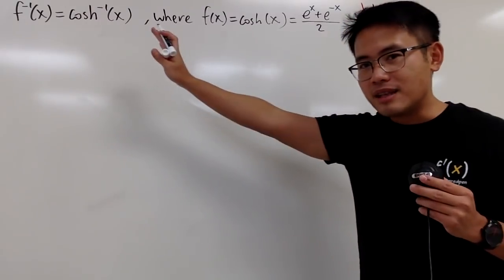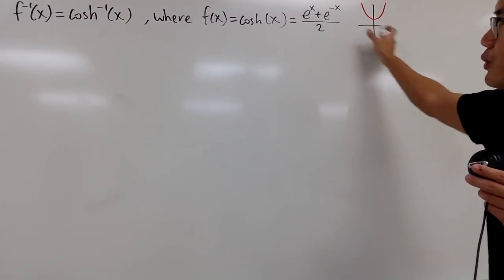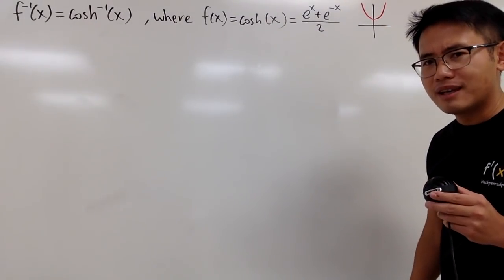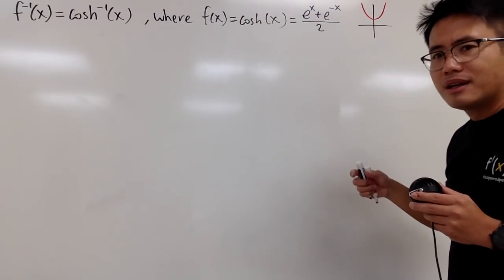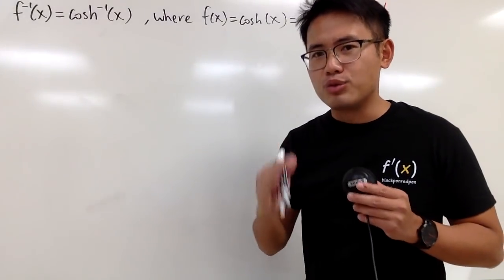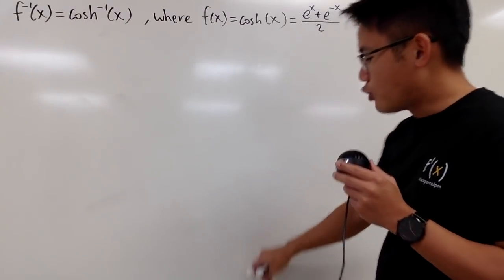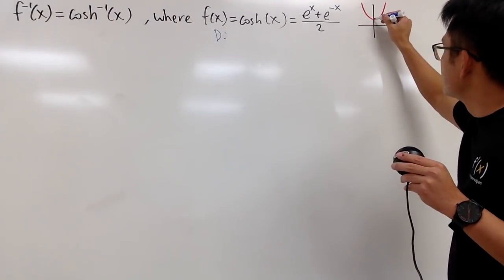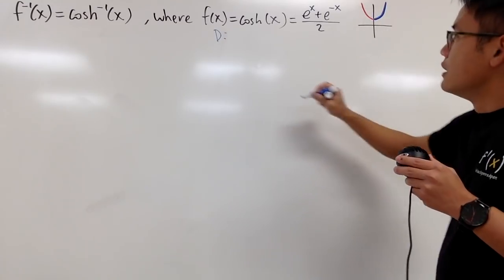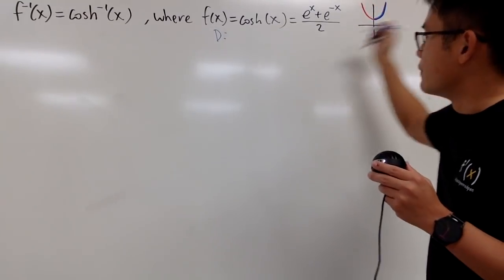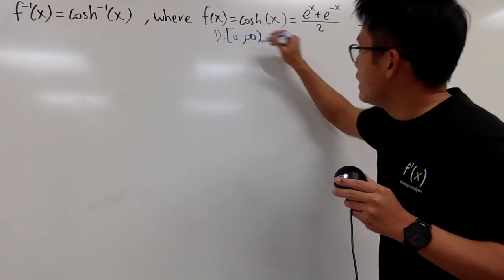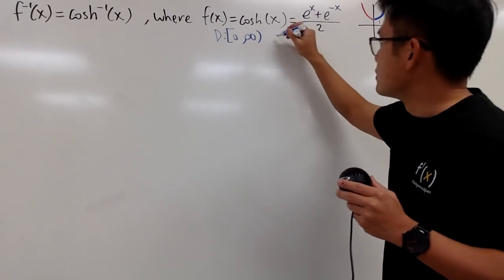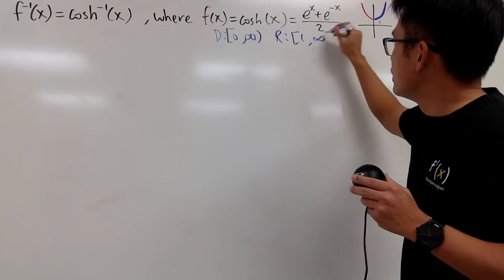In order for us to get the inverse, this does not pass the horizontal line test. So if you rotate it, that's not going to be a function unless you restrict the domain. The domain so that this has an inverse is from 0 to infinity. And the range — when x is 0 you get 1 — so the range is 1 to infinity.